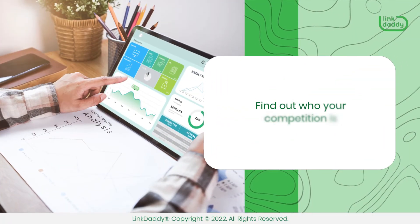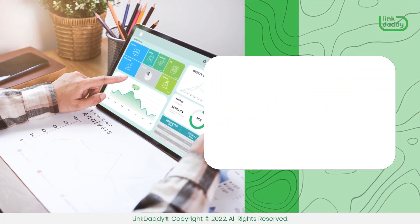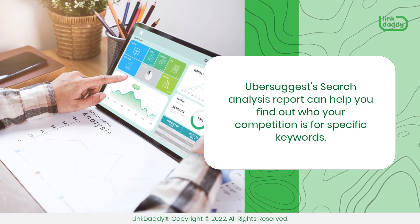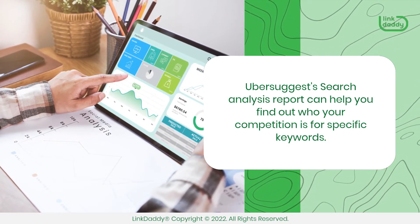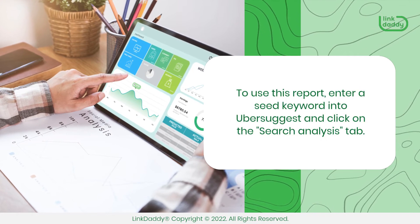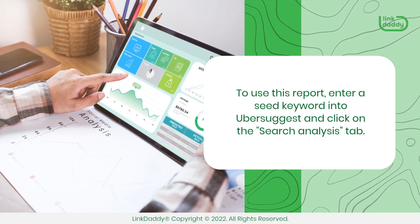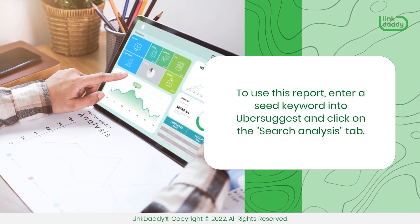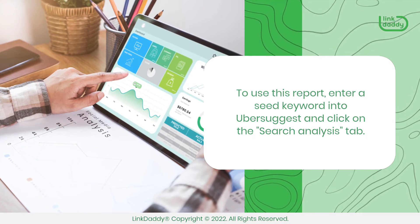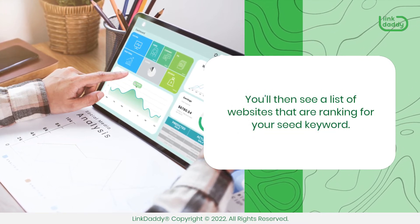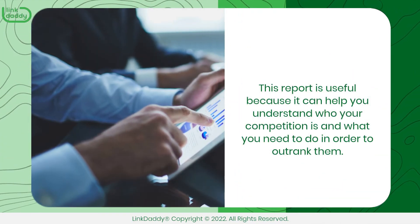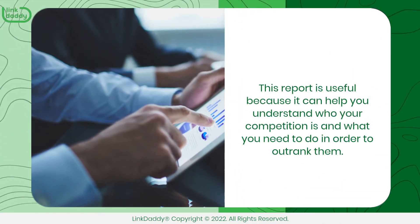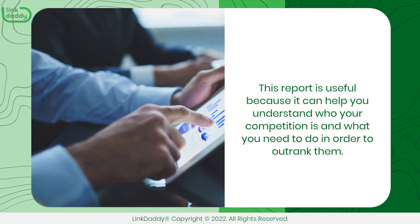Find out who your competition is. Ubersuggest's Search Analysis report can help you find out who your competition is for specific keywords. To use this report, enter a seed keyword into Ubersuggest and click on the Search Analysis tab. You'll then see a list of websites that are ranking for your seed keyword. This report is useful because it can help you understand who your competition is and what you need to do in order to outrank them.